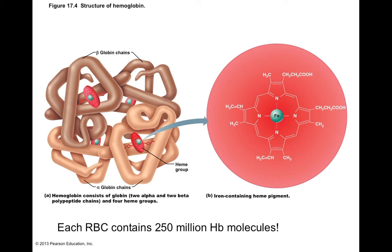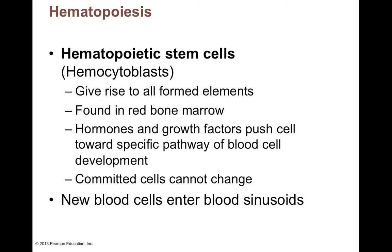Since red blood cells only last about 90 to 120 days, you have to continually produce new ones. This comes from hematopoietic stem cells, also called hemocytoblasts, which give rise to all the formed elements — white blood cells, red blood cells, and platelets. You find these in red bone marrow, and their function is to make new blood cells.